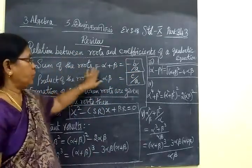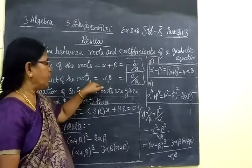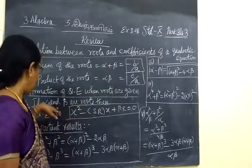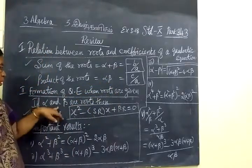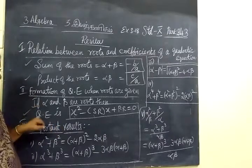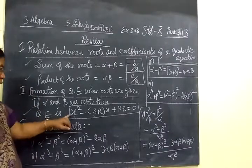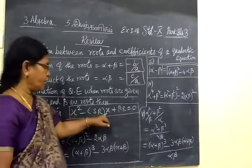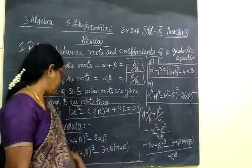As we know, sum of the roots is equal to −b/a, and product of the roots is c/a. If α and β are the roots, then the quadratic equation is x² − (sum of roots)x + (product of roots) = 0.